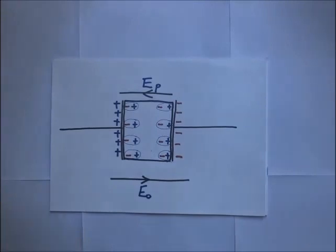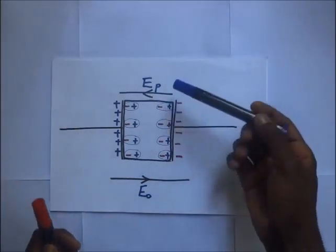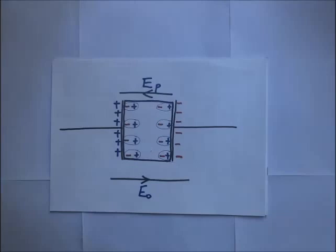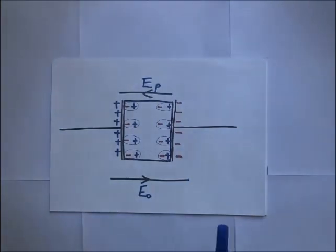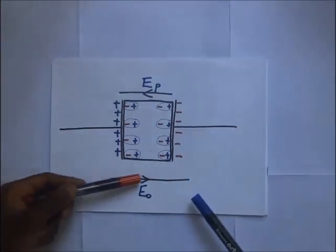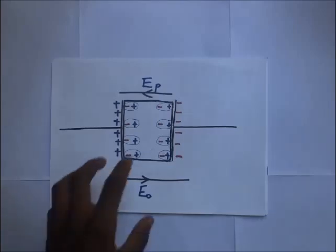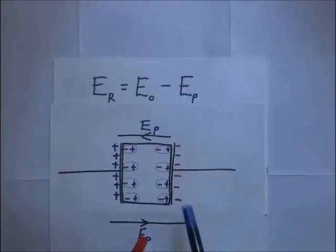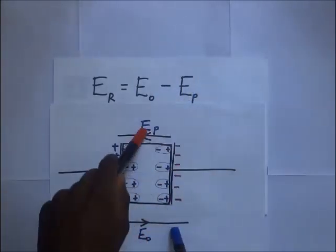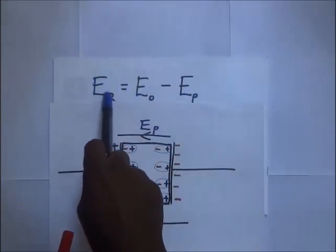So we have two fields acting in opposite directions in the same space. The resultant field E_r equals E₀ minus E_p, the field due to the plates minus the field due to polarization of the dielectric molecules. This effective resultant field E_r will be much less than the original field E₀.